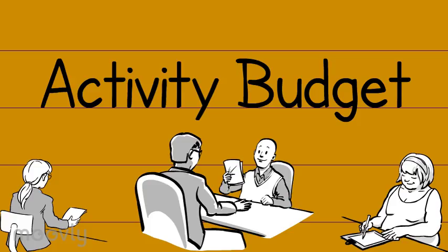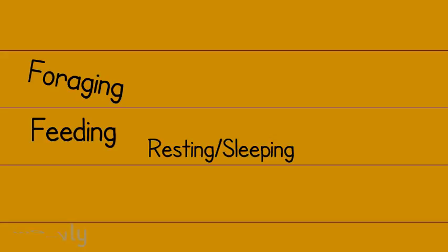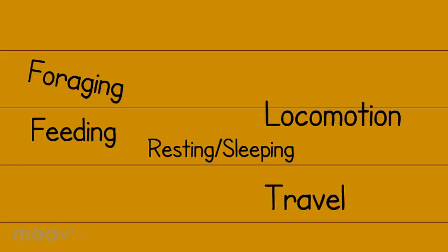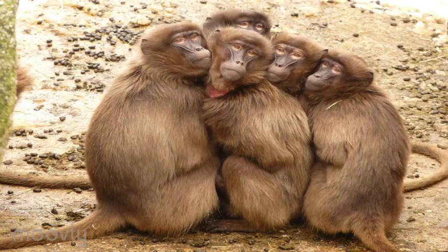Similar to how humans may call it making a living, how a primate decides to spend its time is called an activity budget. This activity budget mainly consists of foraging, feeding, resting, sleeping, locomotion, traveling, and of course, being social with one another.